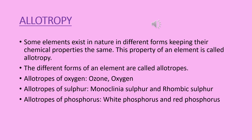Now I am giving some examples of allotropes. Allotropes of carbon are diamond and graphite. Besides carbon, there are some other elements that have allotropes. Allotropes of oxygen are ozone (O₃) and oxygen itself (O₂).